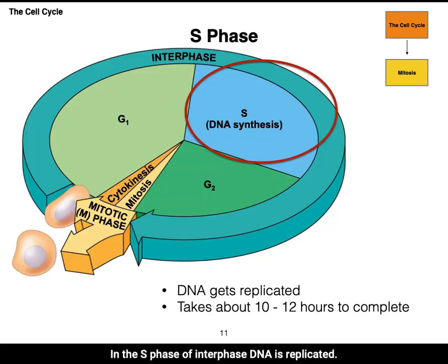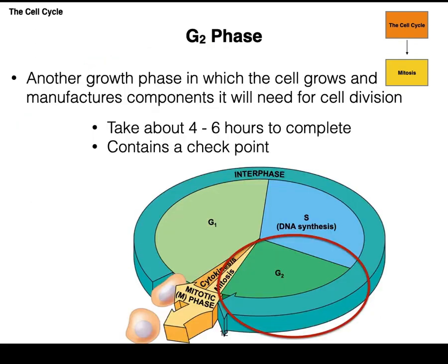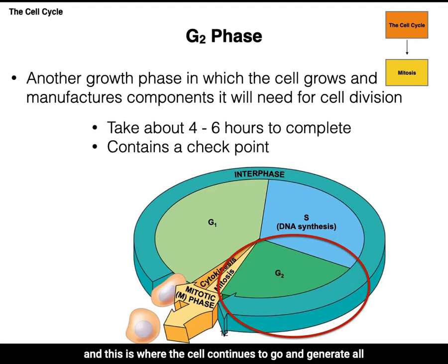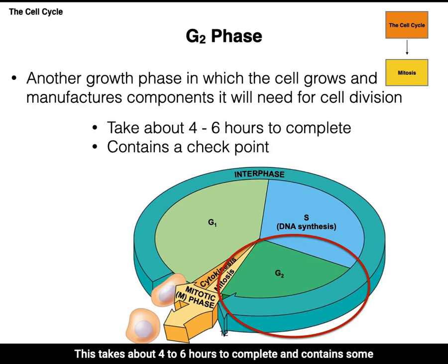In the S phase of interphase, DNA is replicated — this takes about 10 to 12 hours to complete. Finally, there's the G2 phase, where the cell continues to generate all the components necessary for cell division. This takes about four to six hours to complete and contains checkpoints that will be discussed in a further lecture.